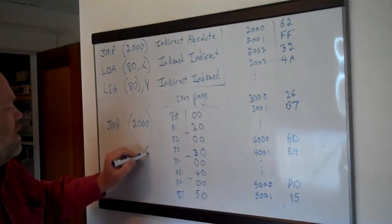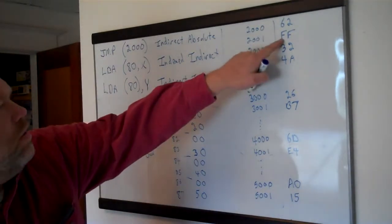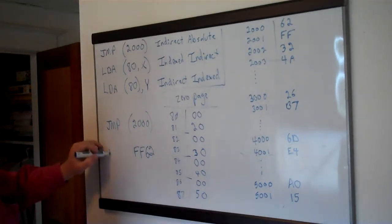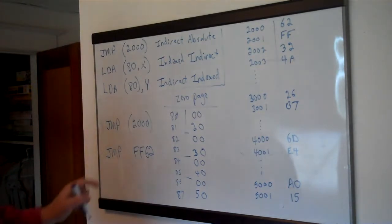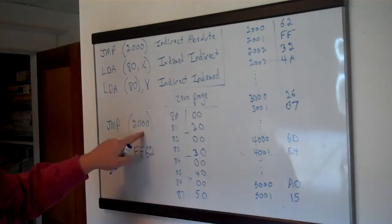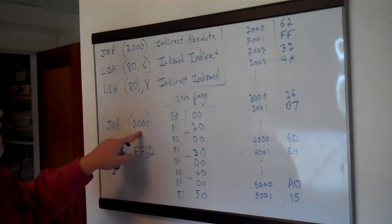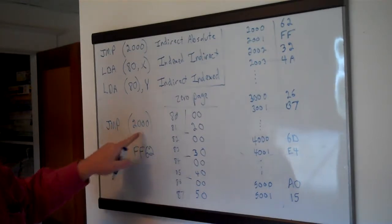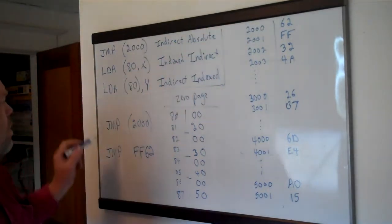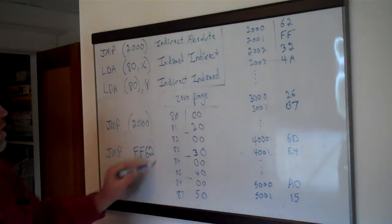What this does is it goes out to address 2000 in hex and gets that value as the low byte of an address. Then it goes to the next address, 2001, and gets that byte as the high byte. Then it jumps to that address. So it builds an address out of the low byte and high byte it finds at 2000 and 2001, puts them together, and jumps to that — equivalent to a direct jump if you know the address at compile time.